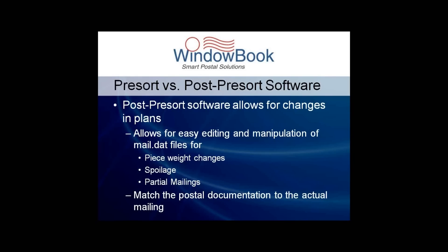The last example we'll look at is a partial mailing. Let's say the file run through the pre-sort step was a million records, but your mail shop can only prepare and palletize 200 of those pieces on Monday. Using post-presort software like DatMail, you can identify and report on just the containers that you plan to present to the postal service for processing Monday night. These three examples are just a few of the ways that DatMail can let a user accommodate changes to the initial pre-sort plan and produce postal documentation that matches the actual mailing being presented for processing and delivery.